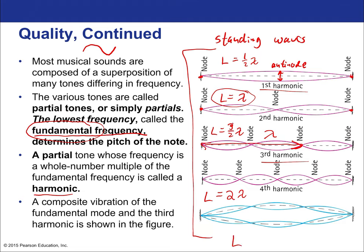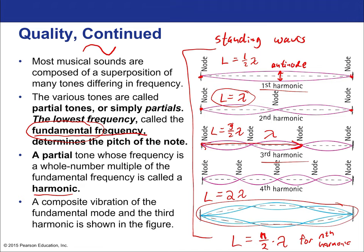For progressive harmonics, it's n over 2 times lambda for the nth harmonic. And this is the idea of timbre — when you add together harmonics you get a complex sound shape. That's the idea of standing waves and harmonics.